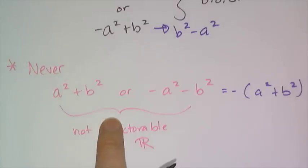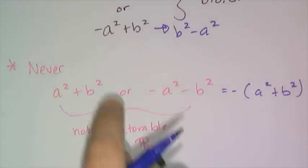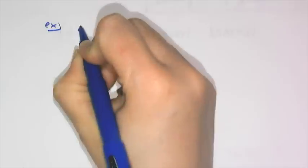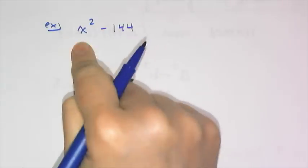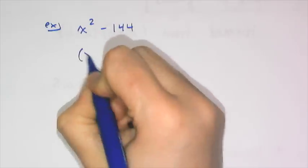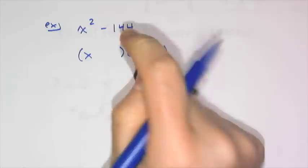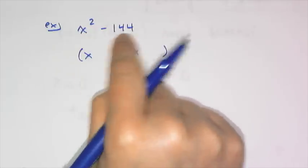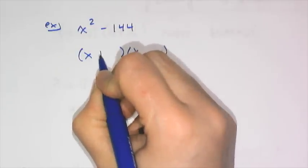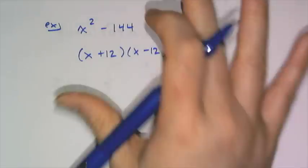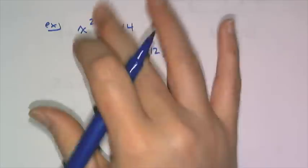The basic difference of squares example is straightforward — you just have to recognize perfect squares. For example, x squared minus 144: x squared is obviously a square, and 144 is 12 squared. It's a difference of two terms, so it factors simply as (x plus 12)(x minus 12).